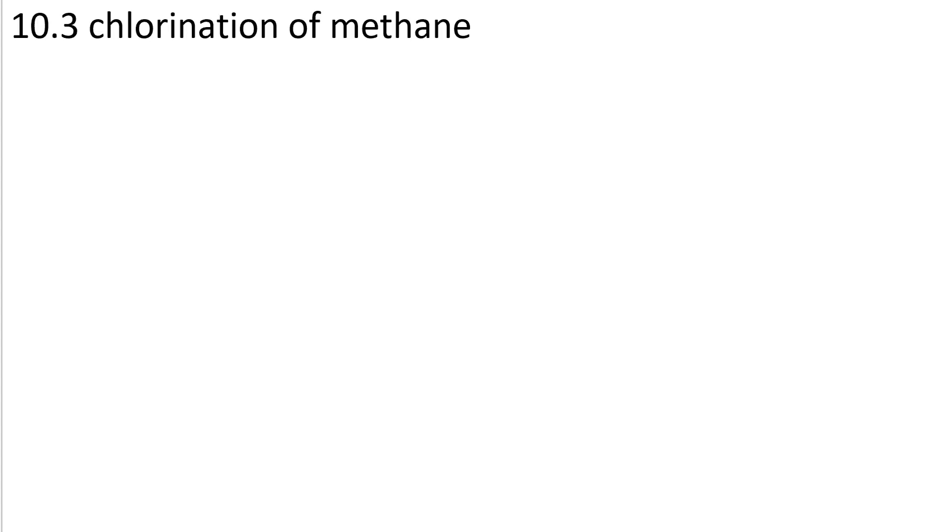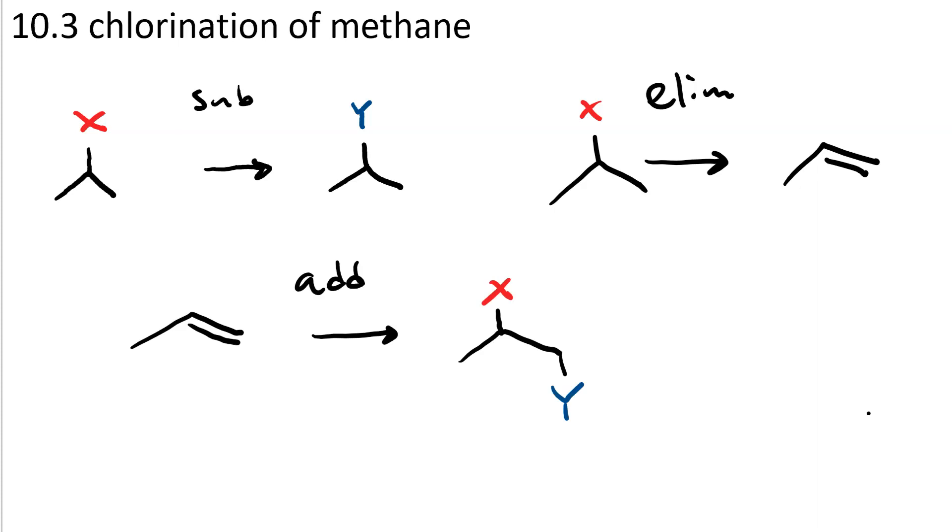Chlorination of methane. So far, we only know a few types of reactions. Substitution replaces one leaving group with another. Elimination gets rid of a leaving group and a beta proton and replaces those with a pi bond. Addition gets rid of the pi bond and adds something across it.